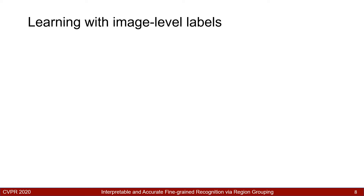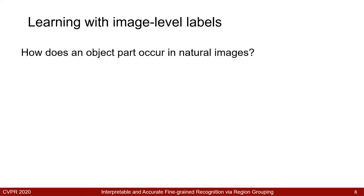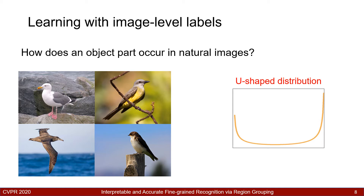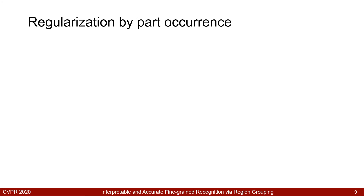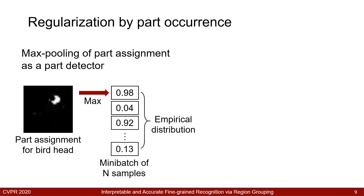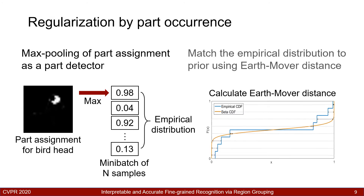The key challenge of our model is the learning of part representation without direct supervision. To address this, we propose a novel regularization based on the occurrence of parts. Consider example images from bird species recognition: the head of a bird is most likely to occur in all images, while the legs might not be visible in some images. Our key idea is to model the distribution of part occurrence using a U-shaped distribution. This distribution acts like a probabilistic binary switch, where we can control the probability of parts being on or off by varying the parameter. Our model detects the occurrence of a part using max pooling over its part assignment map. The occurrence is aggregated for all parts within a mini-batch to produce an empirical distribution of part occurrence, which is then aligned to the U-shaped prior distribution by matching using the sliced Earth Mover's distance along each dimension via their CDF.